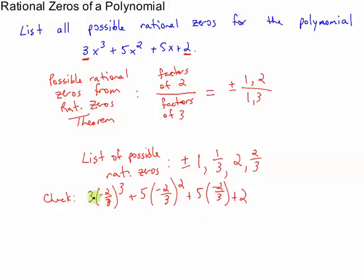So lots of calculators allow you to type this entire expression just like this. And if you get zero, then that means negative 2 thirds is a zero in this case. Because when you plug it in, you get zero. So that's a zero. So we found that negative 2 thirds is a zero.